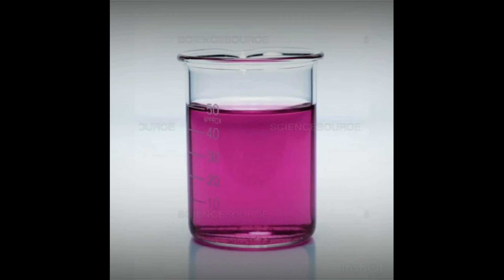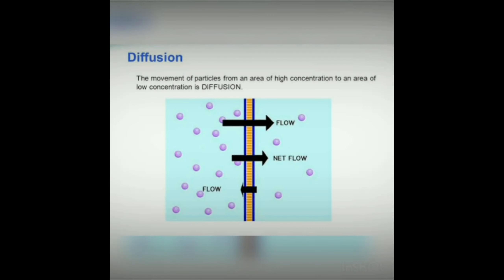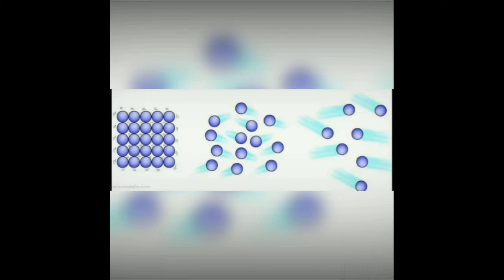This color change happens because of diffusion. Diffusion is the movement of a substance from an area of higher concentration to an area of lower concentration. The diffusion rate in solids is very low.